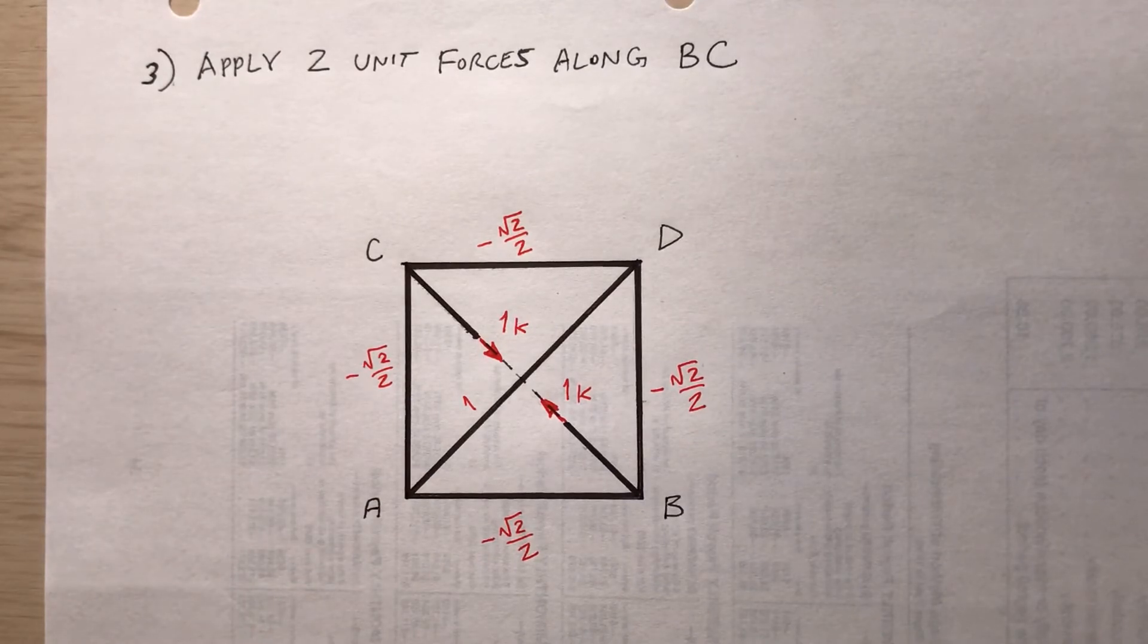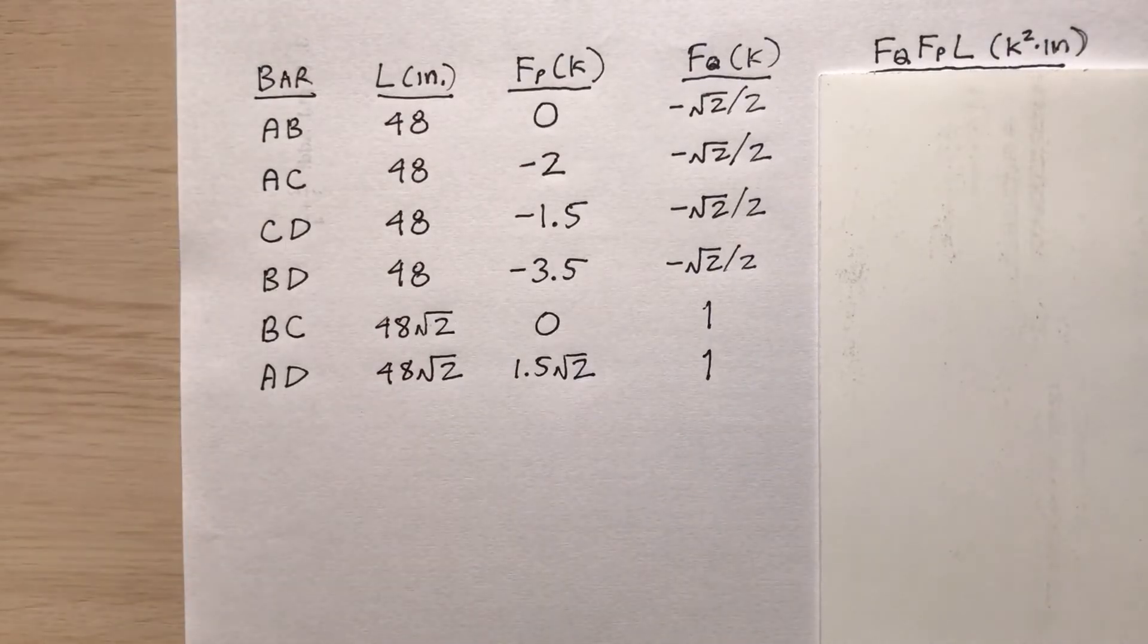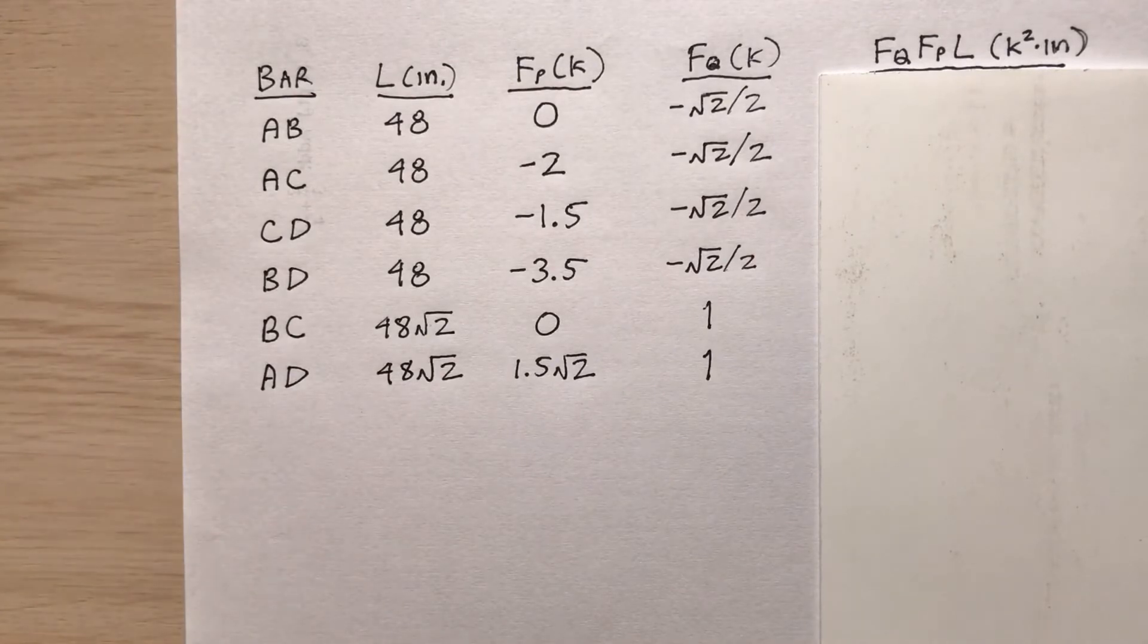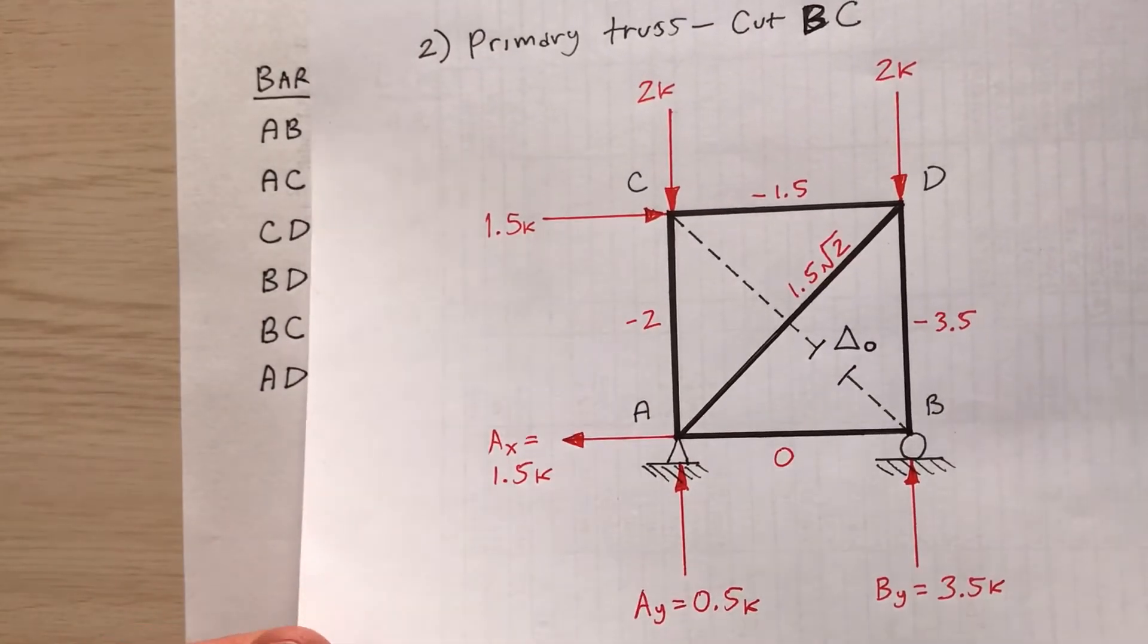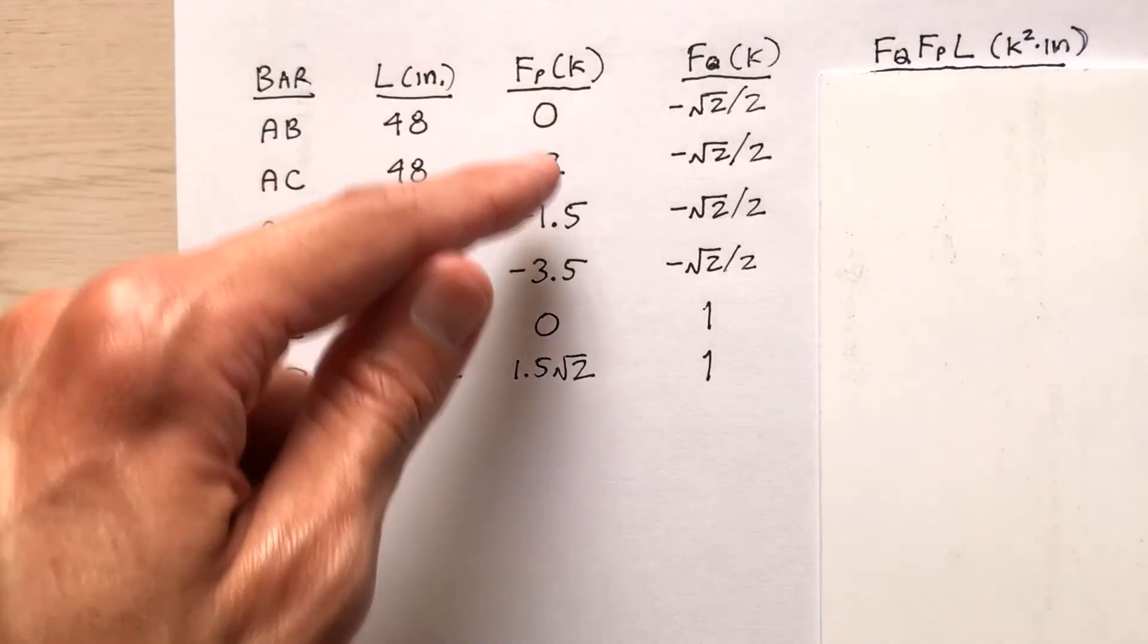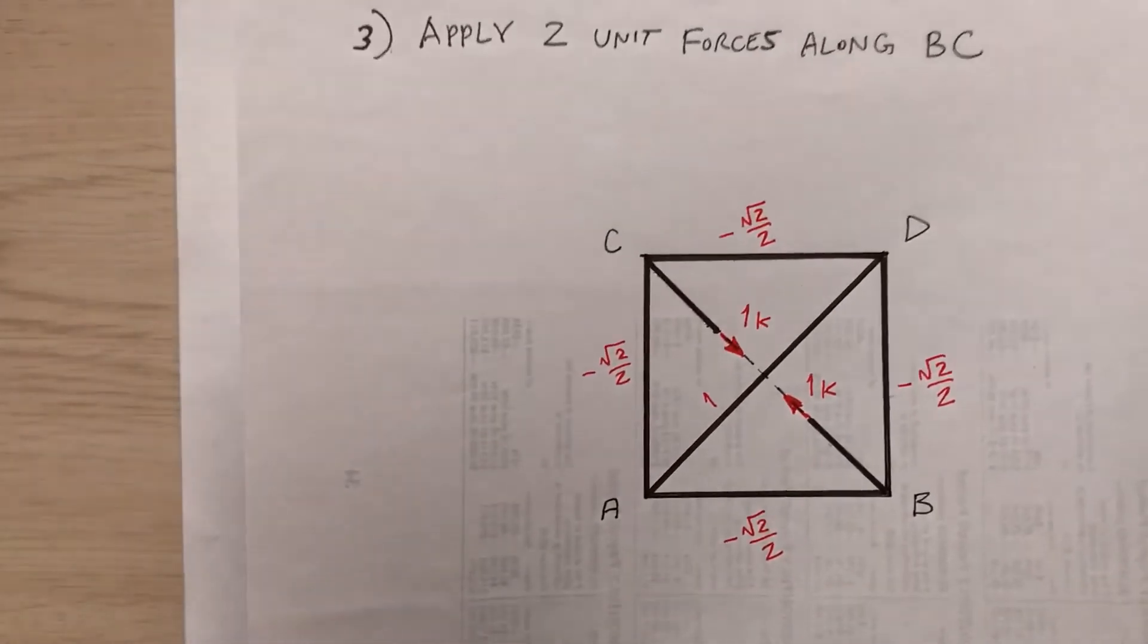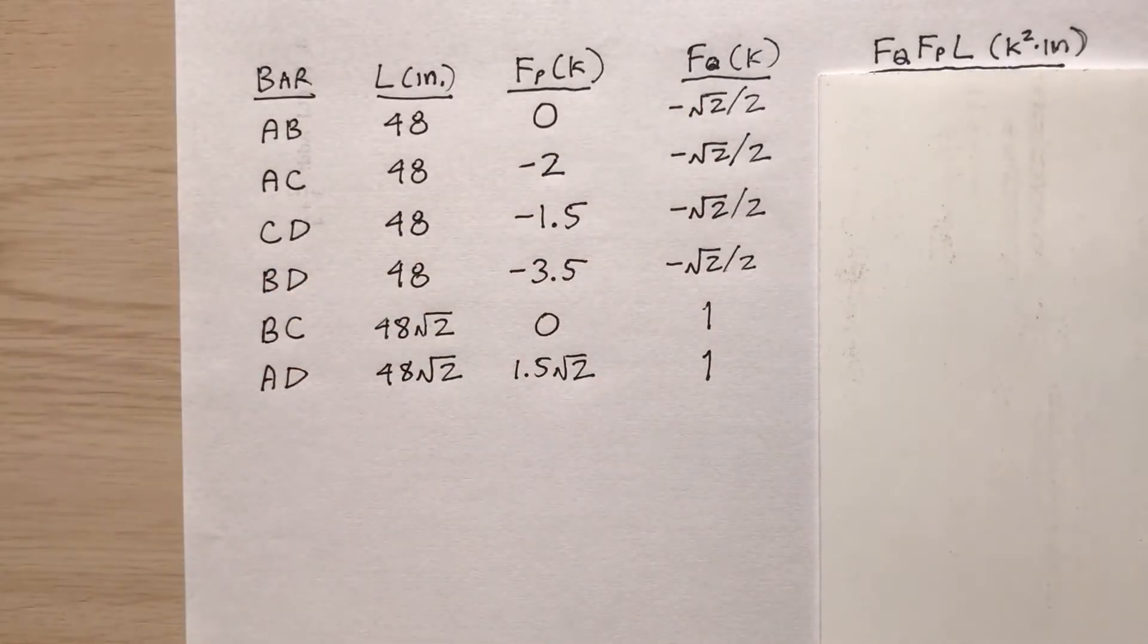And now I want to organize all this into a table. I've got the primary truss and I've got this truss here with the two unit forces along BC. Organize everything into a chart. My six bars. So what am I putting together here? The length of each bar, F sub p. So I'm using the method of virtual work. I have a real system and I've got a virtual system. This will be my real system. Take note of all the bar forces, transfer them over here into the table. And then this is my virtual system. Notice all the bar forces, transfer those over.